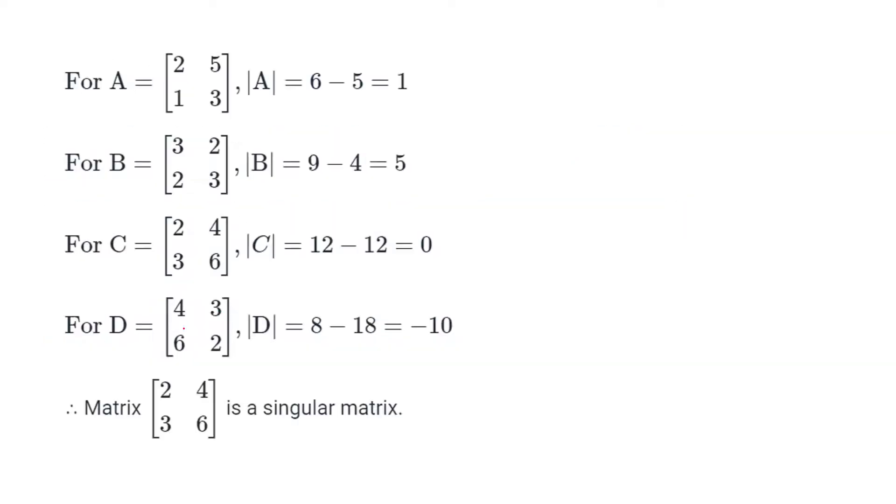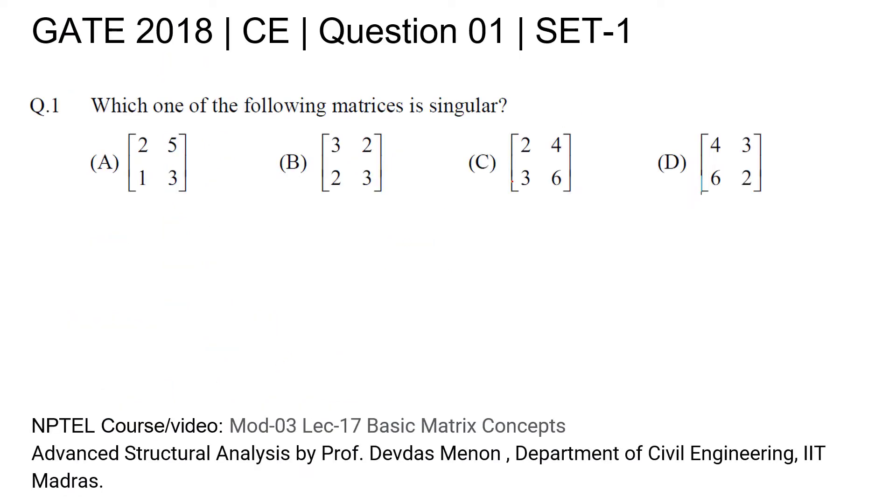After calculation, our matrix is this: 2, 4, 3, 6 is a singular matrix. How did we check that? The determinant of the matrix C is zero. Therefore, the matrix 2, 4, 3, 6 is a singular matrix. Thank you.